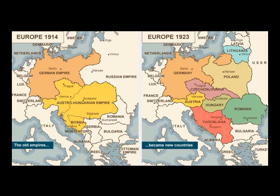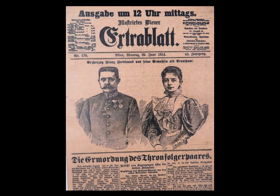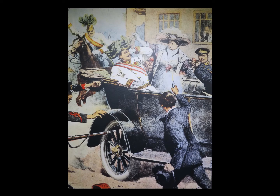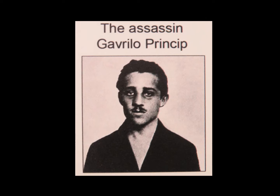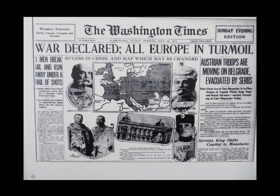The spark that ignited World War I was struck in Sarajevo, Bosnia, where Archduke Franz Ferdinand, heir to the Austro-Hungarian Empire, was shot to death along with his wife Sophie by the Serbian nationalist Gavrilo Princip on June 28, 1914. Princip and other nationalists were struggling to end Austro-Hungarian rule over Bosnia and Herzegovina.